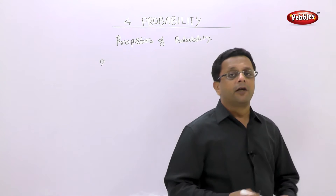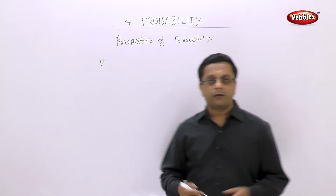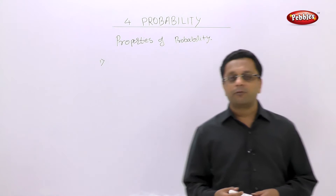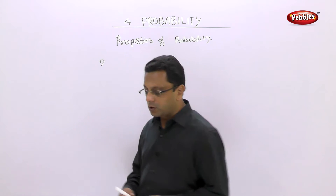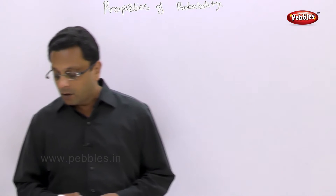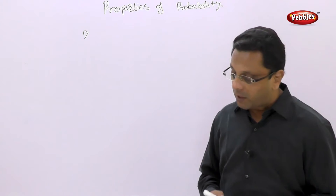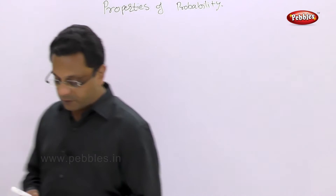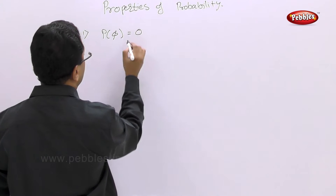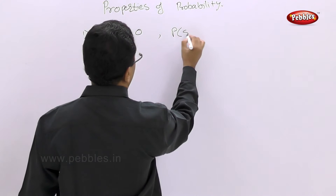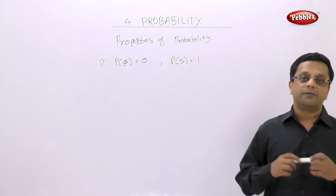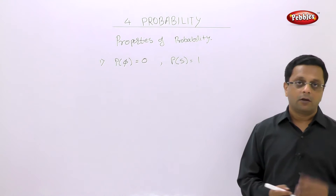Three properties of probability are given. I am not going to show you the proof of probability; the proof is given on page number 88 in your book. The proof is not required here; I am just showing you the properties. You should go through the book for the proof. The first property says: the probability of an impossible event is 0, and the probability of a certain event — which is equal to the sample space — is equal to 1.